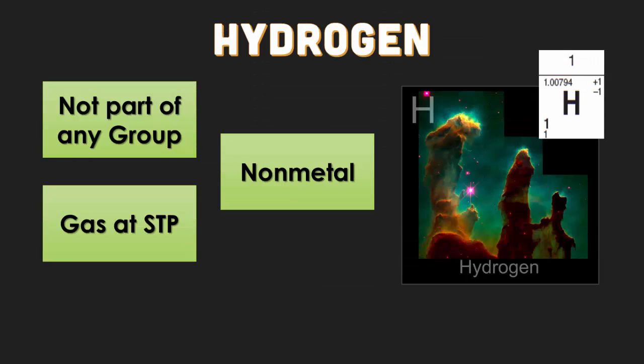Hydrogen is technically not part of any group. It is found in group 1 and it's a gas at STP. Because of the fact it only has one proton and one electron, we have to put it into the group 1 category to follow the rest of the periodic trends.